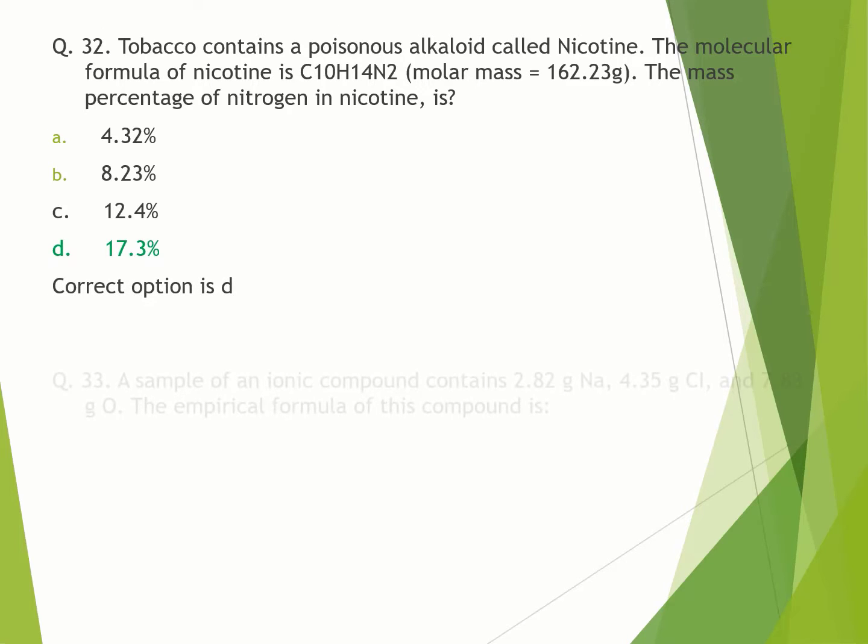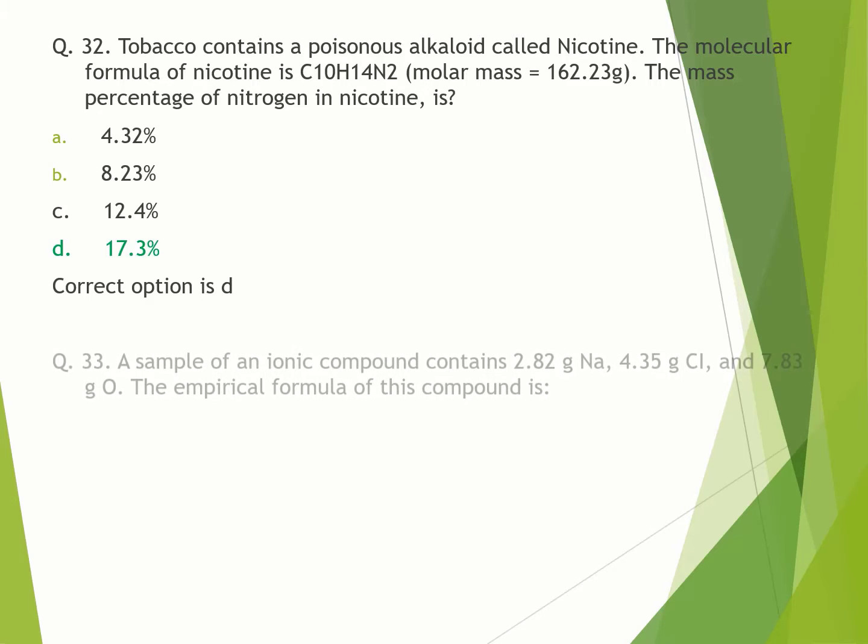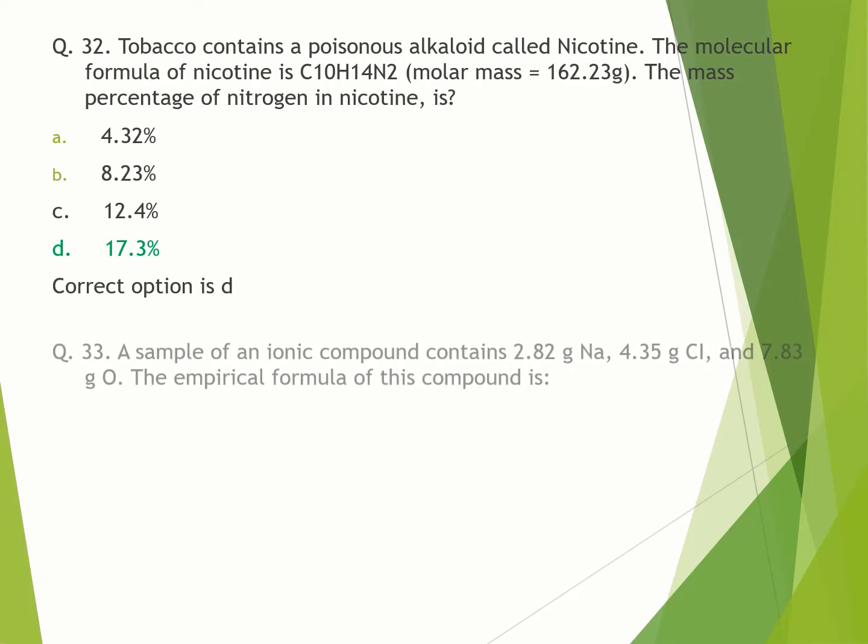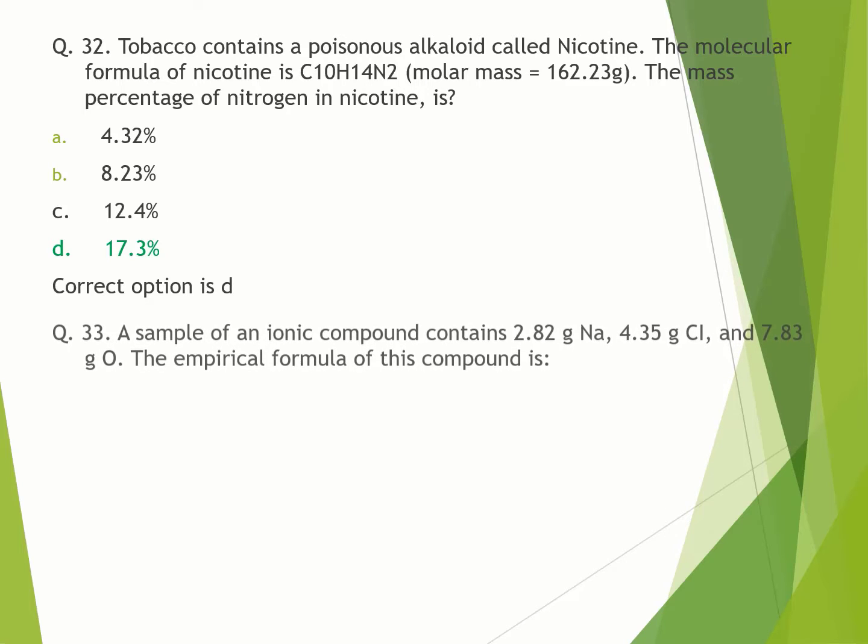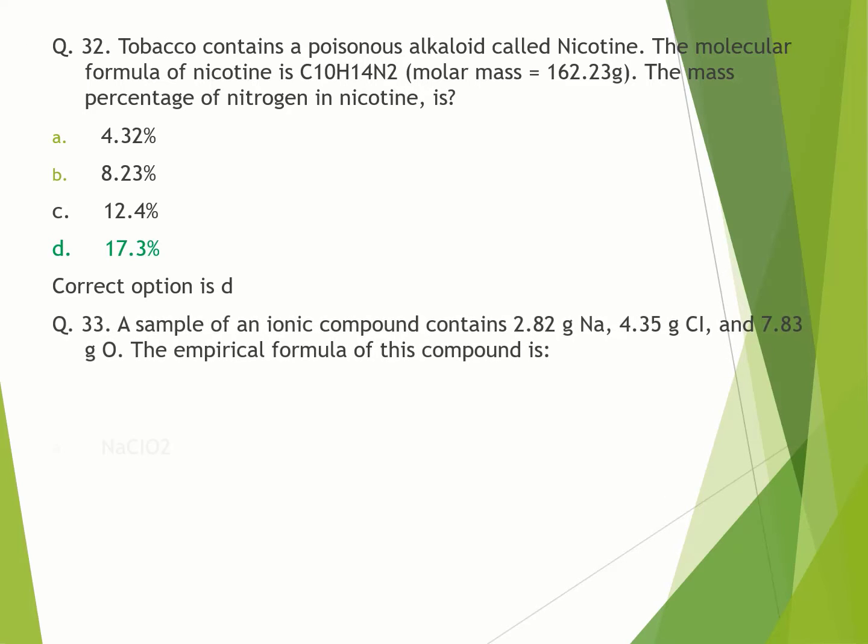Question number 33. A sample of an ionic compound contains 2.82 grams sodium, 4.35 grams chlorine, and 7.83 grams oxygen. The empirical formula of this compound is: A. NaClO2. B. NaClO3. C. NaClO. D. NaClO4. Correct option is D.